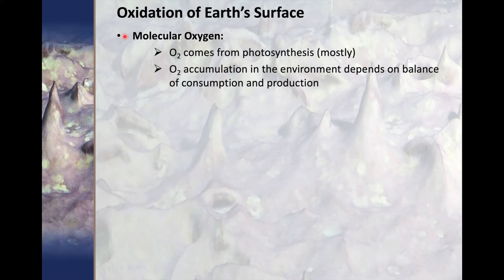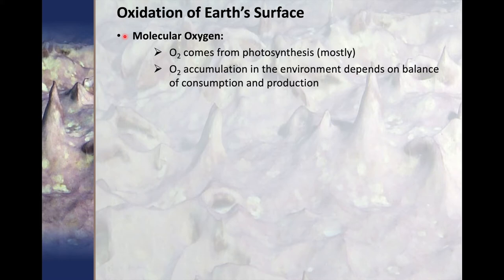The accumulation of oxygen in the environment depends on the balance of how much is produced through photosynthesis and how much is consumed by oxidation of reduced compounds. Organic carbon is one of the biggest sinks on a short term. There are also other sinks — for example, reduced volcanic gases from volcanoes or the weathering of reduced minerals in soil profiles. The bulk of Earth is reduced and it's just the interface that accumulates oxygen, so photosynthesis has to produce enough oxygen to overcome that consumption to actually accumulate oxygen in the atmosphere.